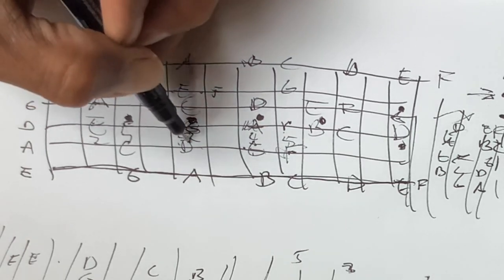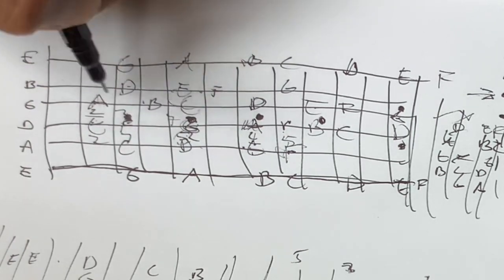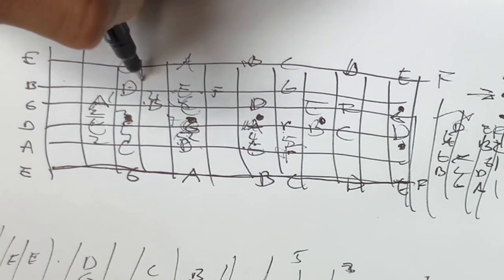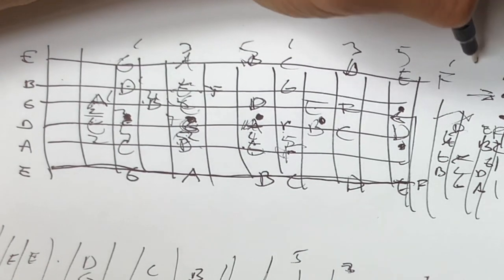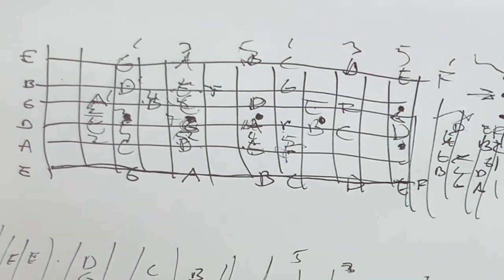So you get the 2, 3, 5. 2, 3, 5. 1, 4, 5. 1, 4, 5. 1, 3, 5. 1, 3, 5. 1, 3, 5. It's that simple.